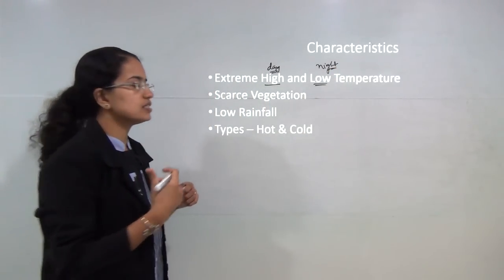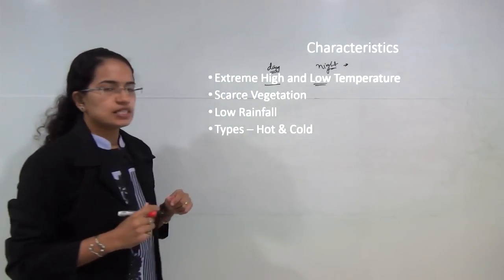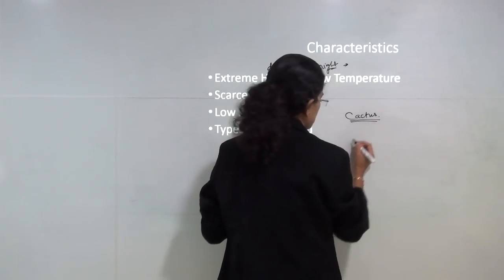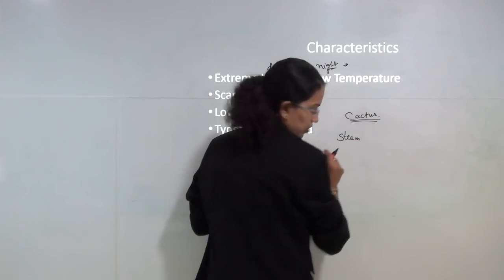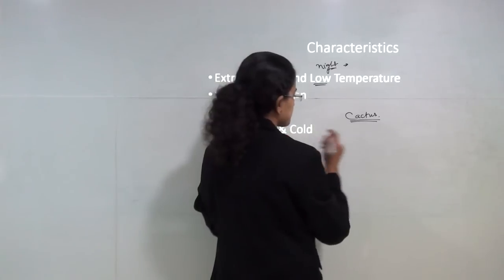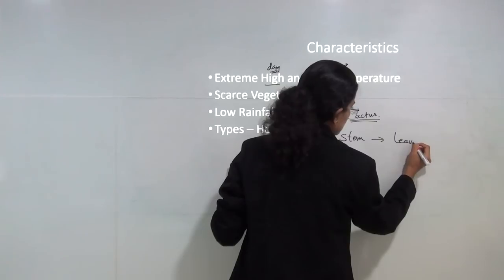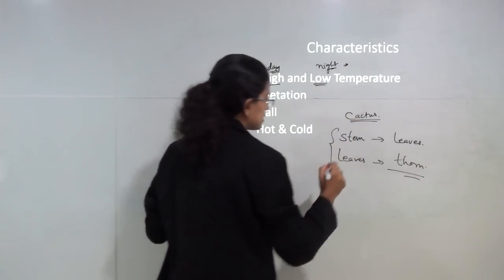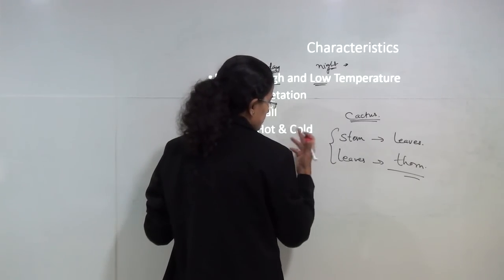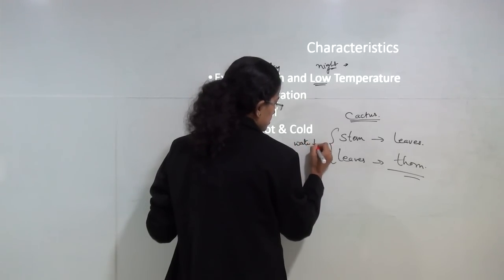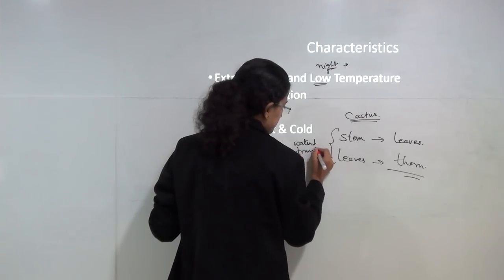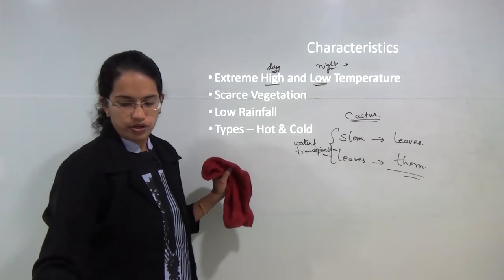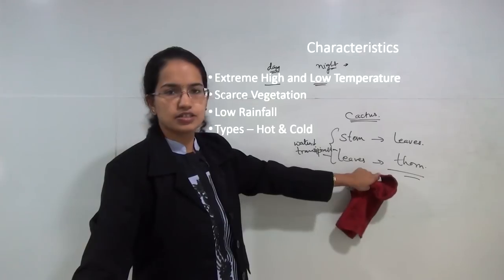In winters the night temperature can even reach freezing point in many areas. The vegetation in the desert is mainly scarce. The main vegetation is in the form of cactus. In cactus you have the modification of stem to leaves and leaves to thorns — these are the commonly seen modifications — and the main idea is to reduce water loss through transpiration. The region also has low rainfall, which results in these vegetation modifications.